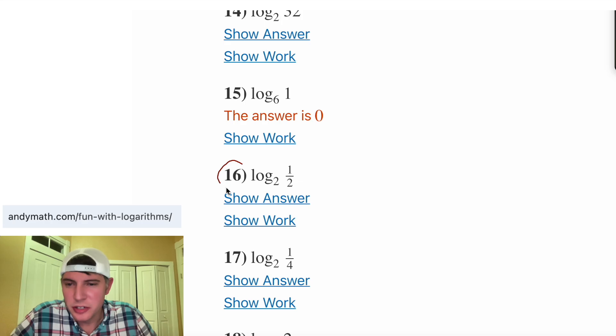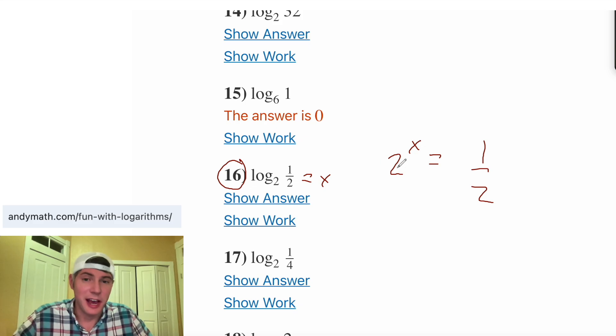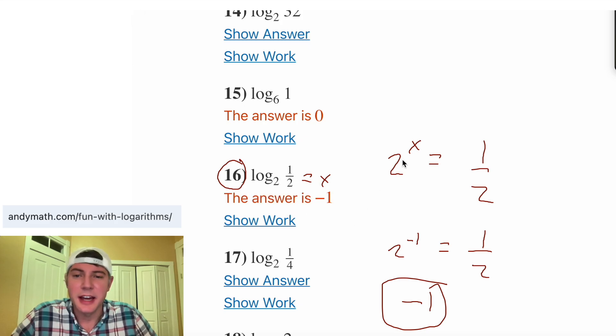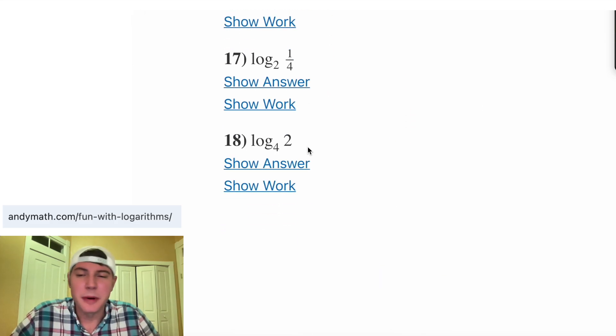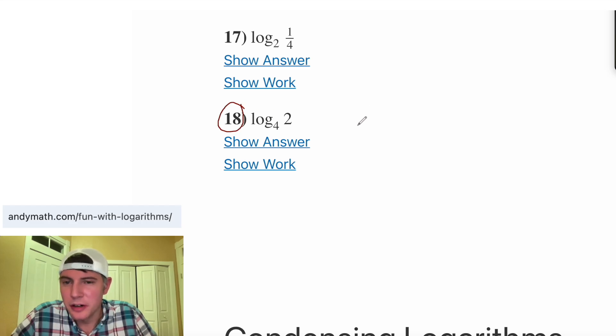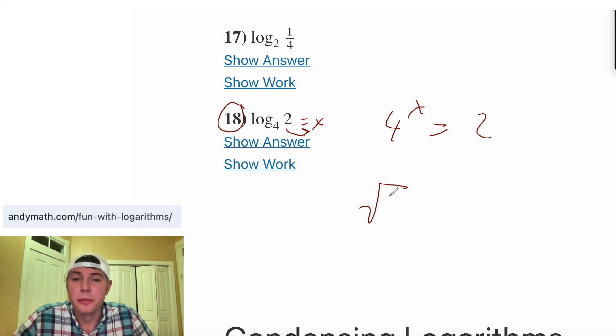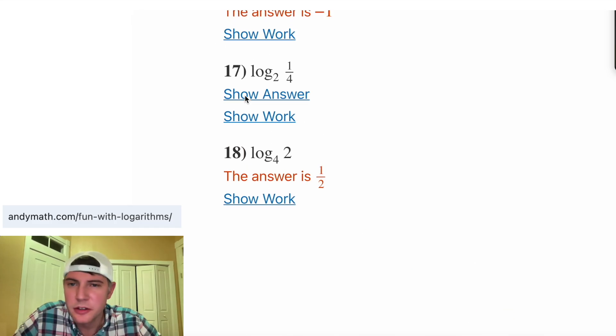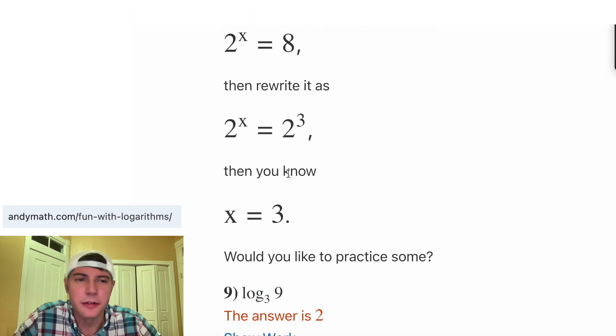And then number 16 shows another type where it would be 2 to the x equals 1/2. So basically, how do you get this 2 on bottom? What happens to be that 2 to the negative 1 is 1/2. That negative exponent puts the 2 on bottom. So the answer to 16 would be negative 1. That is the exponent that you use to get this. And the last type you might see is like number 18, where it'd be 4 to the x equals 2. Well really, it's the square root of 4 that equals 2. And the way we write square root is to a 1/2 power. So the answer is going to be 1/2 because that's the exponent.